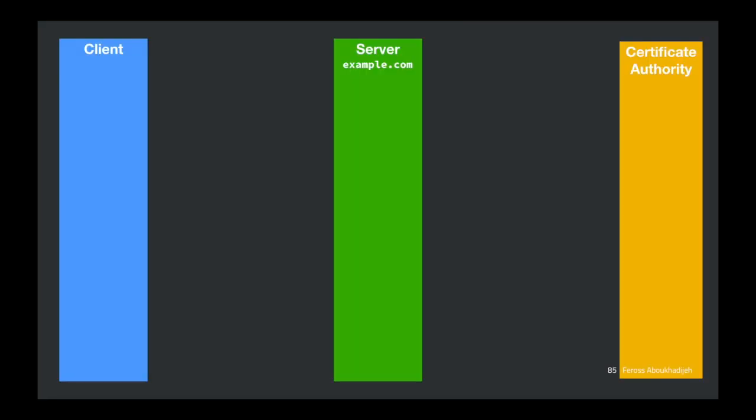Now in this example we'll include the certificate authority as an organization. The first thing is the server needs a certificate, so the server is going to go out and ask for one.